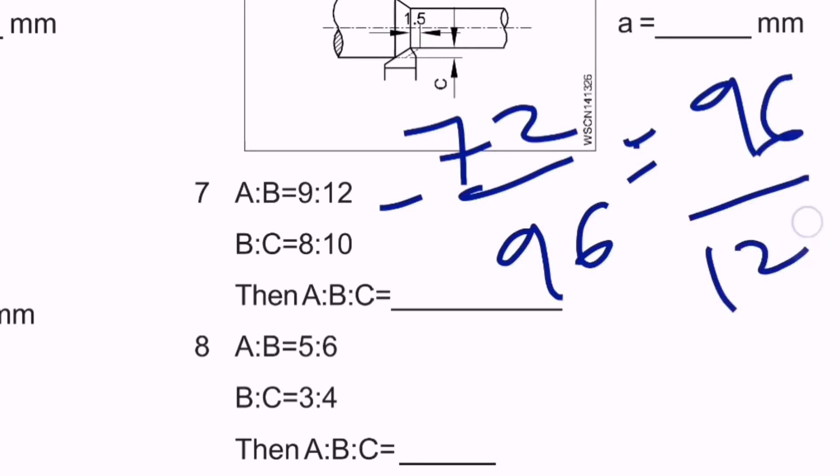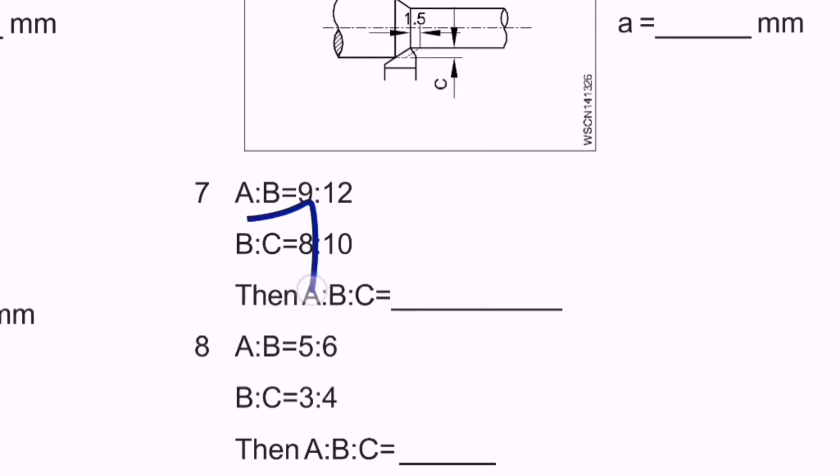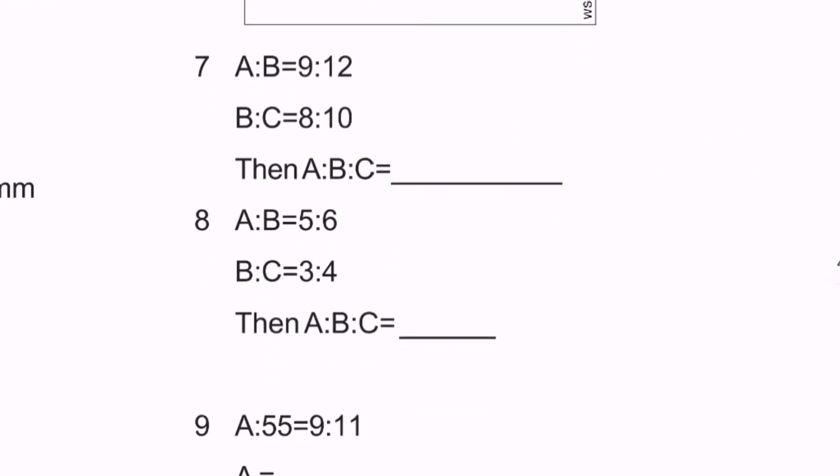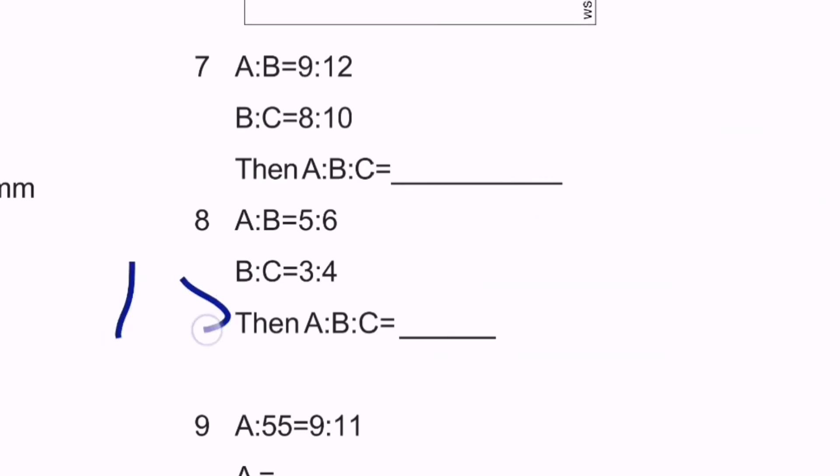If these two are equal, then the answer is 72:96:120. Question eight: A:B is 5:6 and B:C is 3:4, so find A:B:C. Similarly, multiply 3 to the first numbers and 6 to the second numbers. We get 15/18 and 18/24. So the final answer is 15:18:24.